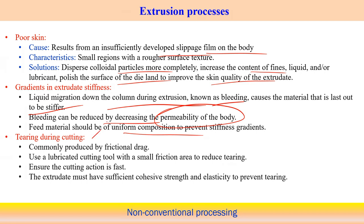These are the different types of extrusion defects and problems associated with the extrusion of ceramic components. Now, we will discuss injection molding. A variety of polymer products are produced with very high productivity using injection molding, which is mainly used for thermoplastic materials such as polyethylene, polystyrene, and polypropylene.